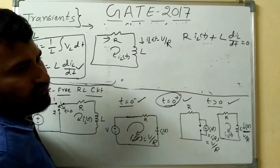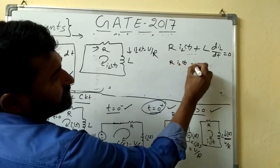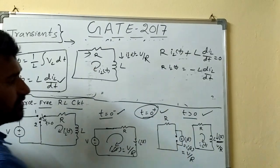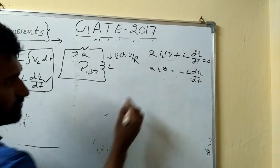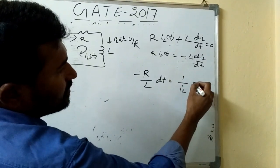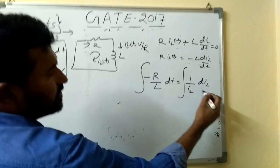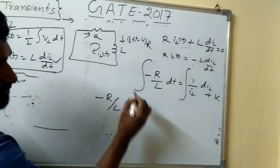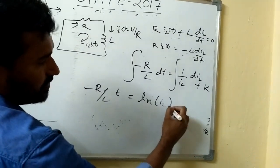This looks like a first-order differential equation. We use the variable separable method: R·I_L(t) = −L·(dI_L/dt). Separating variables: −(R/L)·dt = (1/I_L)·dI_L. Integrating both sides: −(R/L)·t = ln(I_L) + K, where K is the constant of integration.